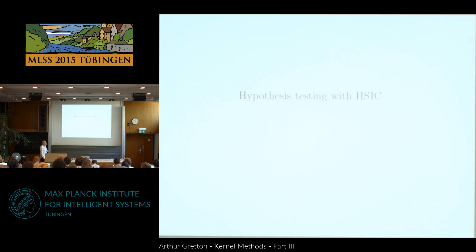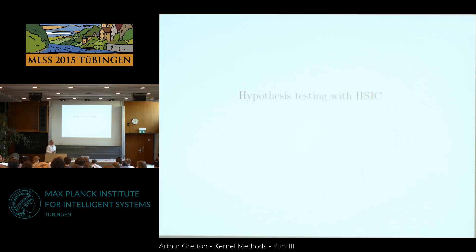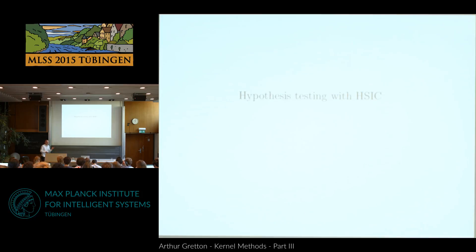HSIC looks a little bit different to MMD. The reason is that MMD was the difference between distributions where you have independent samples from each distribution. But for independence testing, you don't have a sample of the independent variables — you have to invent it by using the samples that you've seen. So the statistic looks a little different, and the analysis is consequently a little more messy. But the ideas are the same, and you'll see the shape of the proof in the same way.